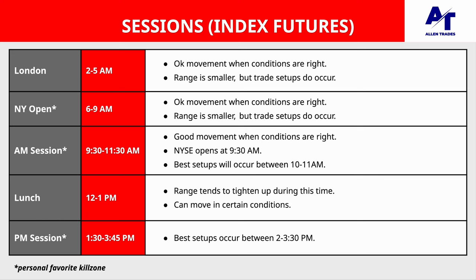Moving on to New York Open, which is from 6 to 9 AM — there's okay movement when the conditions are right, similar to London. The range is usually smaller but trade setups do occur. The only time New York Open is going to have really big ranges is if there is a high impact news event at 8:30. As covered in the last video on the economic calendar, the majority of high impact news events are at 8:30 AM — so on those days you definitely want to be trading the New York Open kill zone. The sweet spot for New York Open is from 7 to 9 AM.